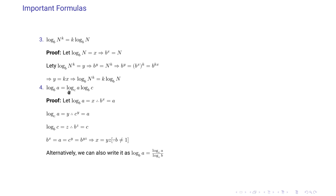The fourth formula is change of base: log of a with base b equals log of a with base c multiplied by log of c with base b. Let log of a base b equal x, so b^x equals a; let log of a base c equal y, so c^y equals a; let log of c base b equal z, so b^z equals c. Then b^x equals a equals c^y equals (b^z)^y equals b^(yz), so x equals yz. Alternatively, log of a base b equals log of a base c divided by log of b base c.